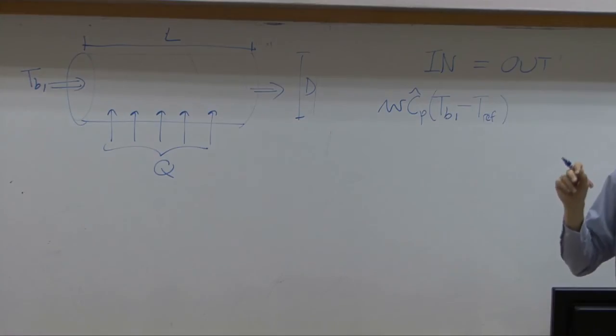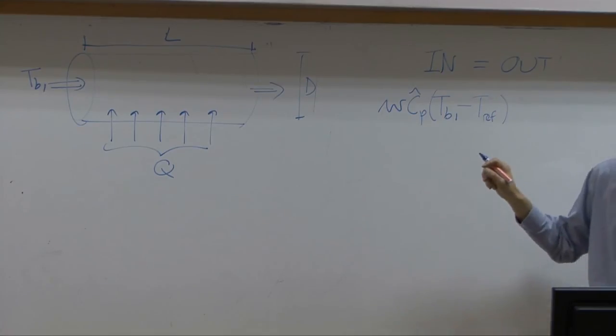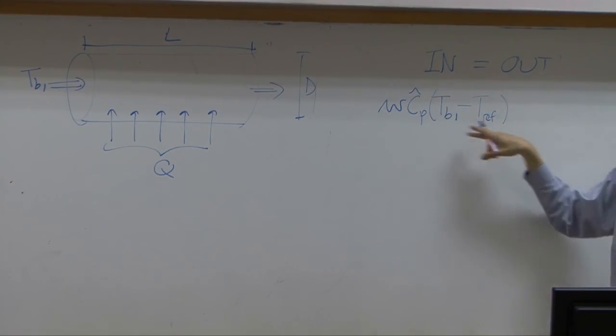If you take the enthalpy at reference temperature to be zero, the enthalpy at your actual temperature would be this number, according to thermodynamics. This amount will be amount of energy coming in together with the fluid. There'll be another energy in. That's heat transfer from outside into the system. That would be taken to be Q, I mean to be input as well. Output would be W Cp Tb2 minus T reference.